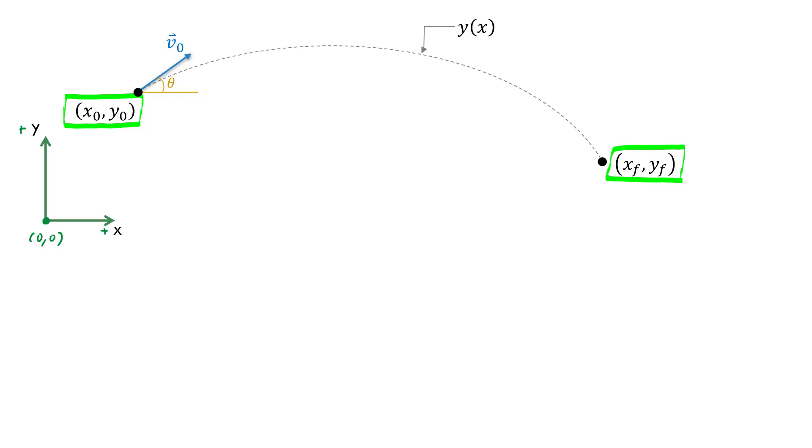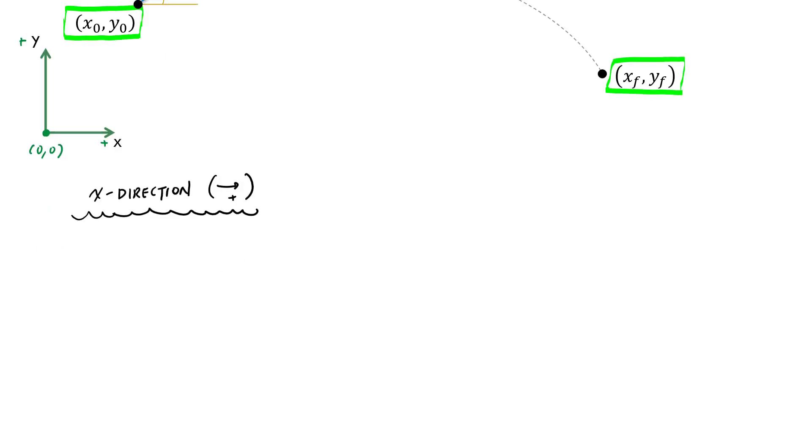We start evaluating the problem by looking at one direction at a time. If I start by looking at the X direction motion, positive defined to the right based on my choice of the origin, I know that the acceleration in X is equal to zero. The definition of acceleration is dVx/dt. If I integrate this, I realize that my velocity in the X direction is a constant V naught X.